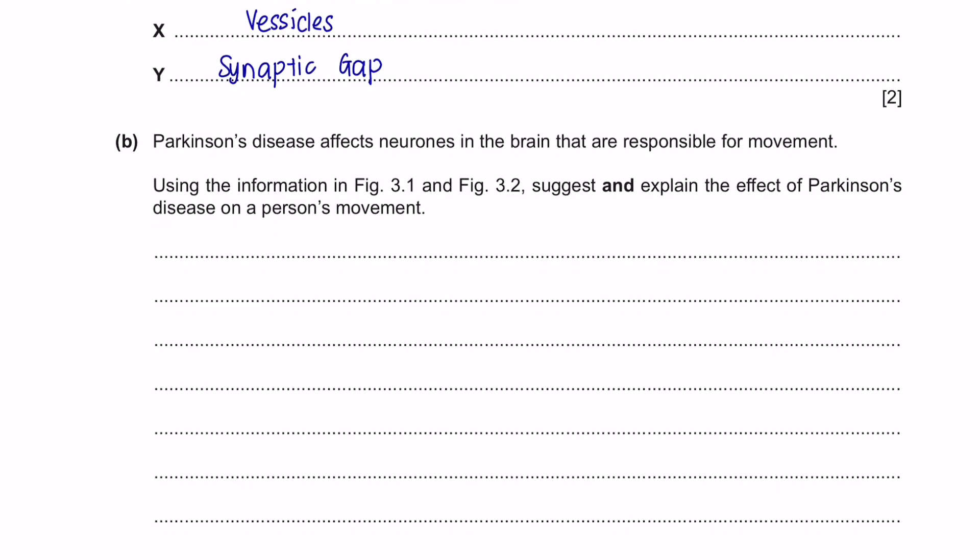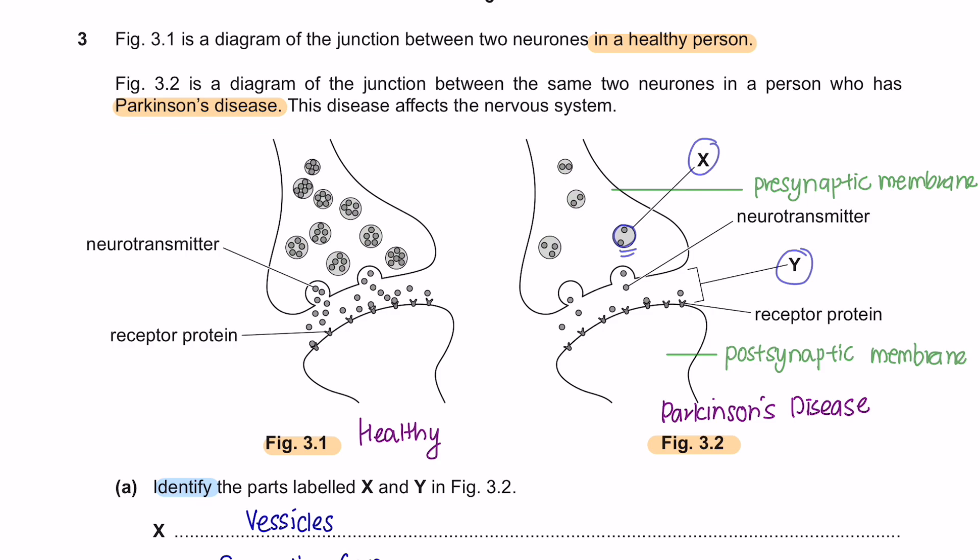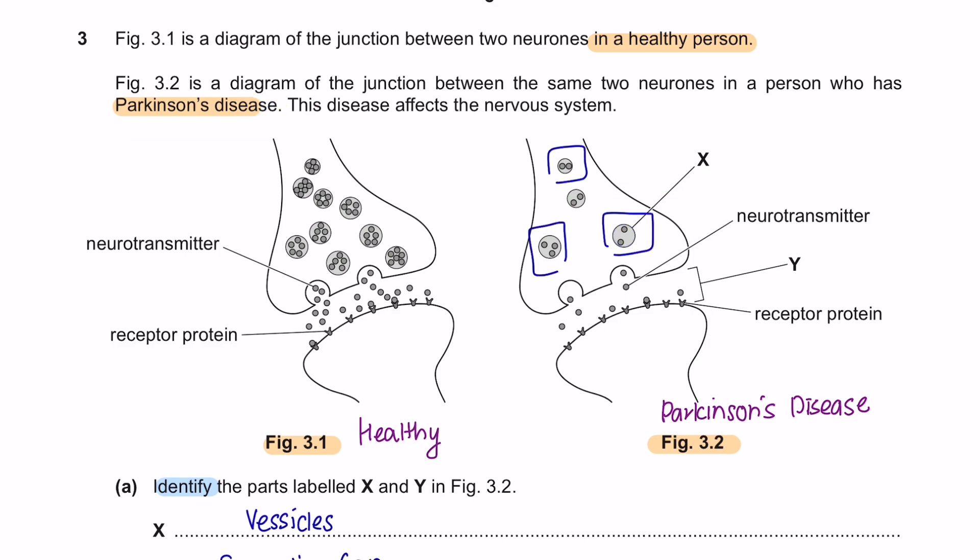Next question B. Parkinson's disease affects neurons in the brain that are responsible for movement. Using the information in figure 3.1 and figure 3.2, suggest and explain the effect of Parkinson's disease on a person's movement. The question here has asked us to suggest the effect of Parkinson's disease. Note here that the command word is suggest. It tells us that we are not expected to know anything about Parkinson's disease, but that we are expected to apply our knowledge or to use the information in figure 3.1 and 3.2 to help us answer this question. So let's look at the differences. As you can see, a person who has a Parkinson's disease has lesser number of vesicles compared to a healthy person. And we can also notice that the number of neurotransmitters in the vesicle of a healthy person and a Parkinson's disease is significantly different. The Parkinson's disease patient has lesser neurotransmitter, causing lesser neurotransmitter to be released.